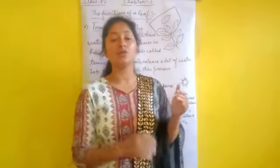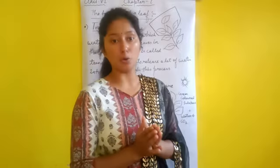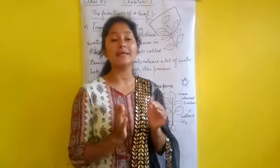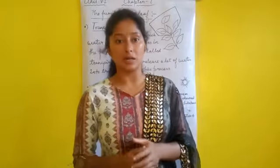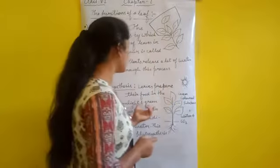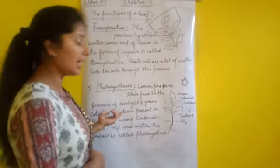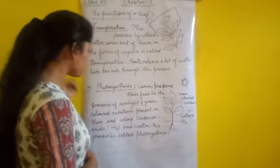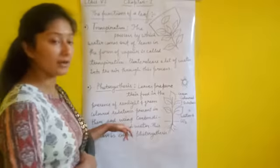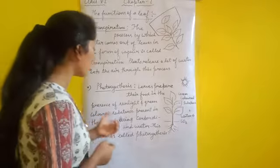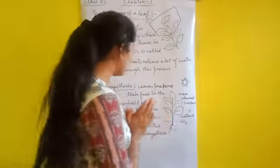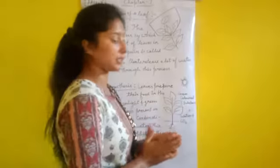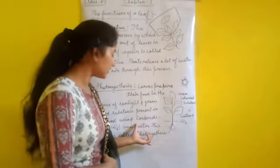Plants ki leaves green appear hooti hai because unme ek green color ka substance hota hai. Jitne bhi plants dekhte hai, unki leaves green color ki hoti hai, either green or some also red in color. Usi green colored substance ki presence mein, and sunlight ki presence mein, and using carbon dioxide and water, leaves food prepare karti hai. And this process is called photosynthesis.